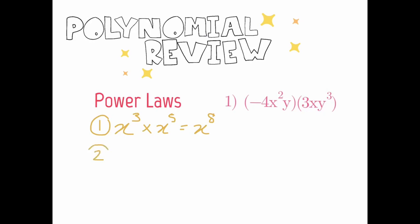For the second type of power law, if I had an example like x to the power of 6 divided by x to the power of 2, again you're going to notice that both bases are the same, but when you have a division sign, you're going to be subtracting the exponents. So 6 take away 2 will be x to the power of 4.